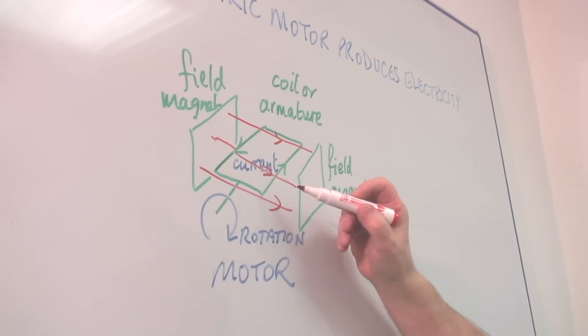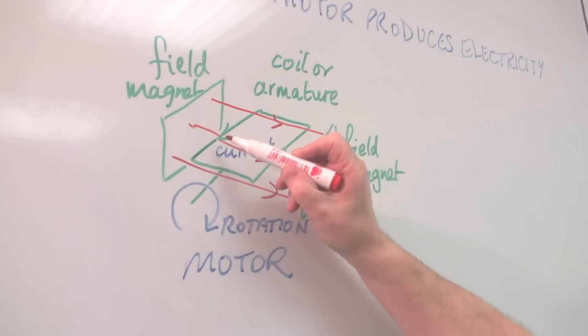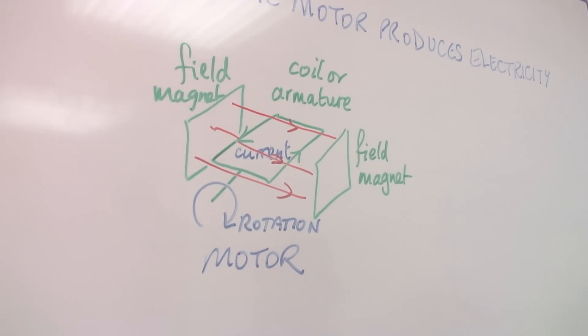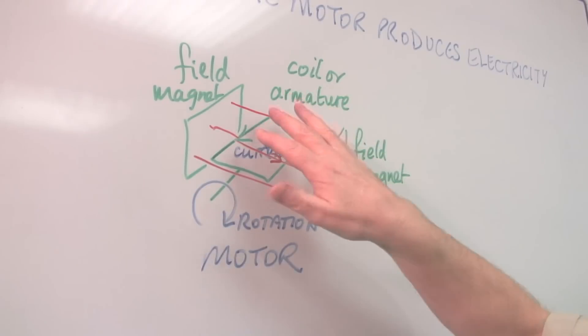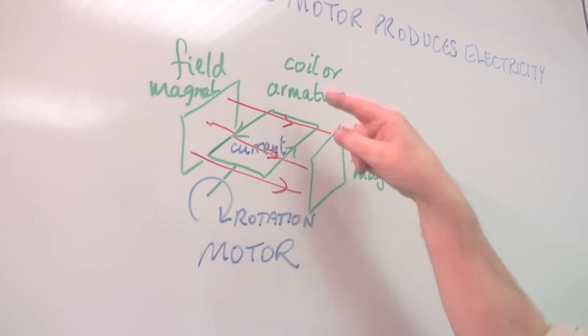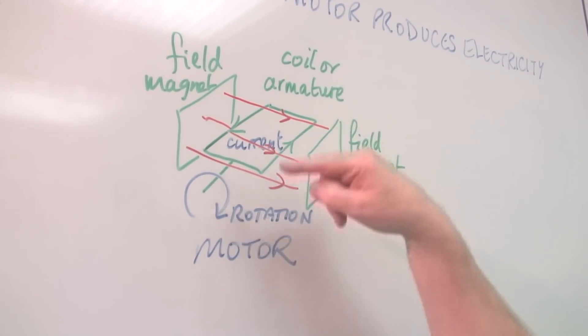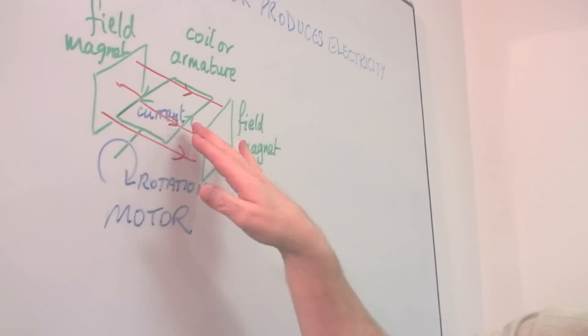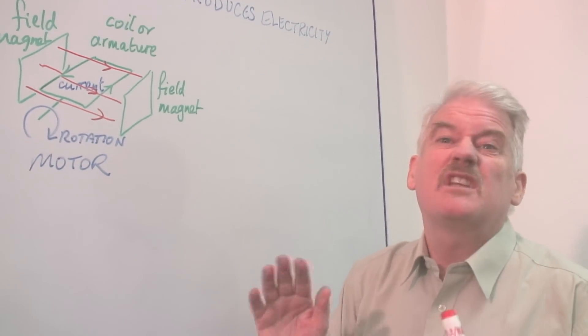Now, if I pass electric current through the wire, I get another magnetic field, and I get a reaction between the two magnetic fields which makes this rotate. Now, I have to do something special to the current to make it rotate, but it rotates.